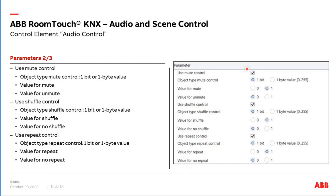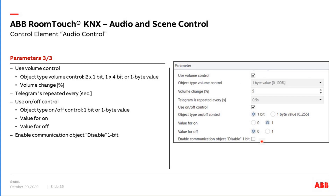For mute control — yes or no — we use one bit or one byte: value one enables mute and value zero unmutes. These are the default parameters. For shuffle control: shuffle value one, no shuffle value zero. For the repeat function: the same — value one or value zero.